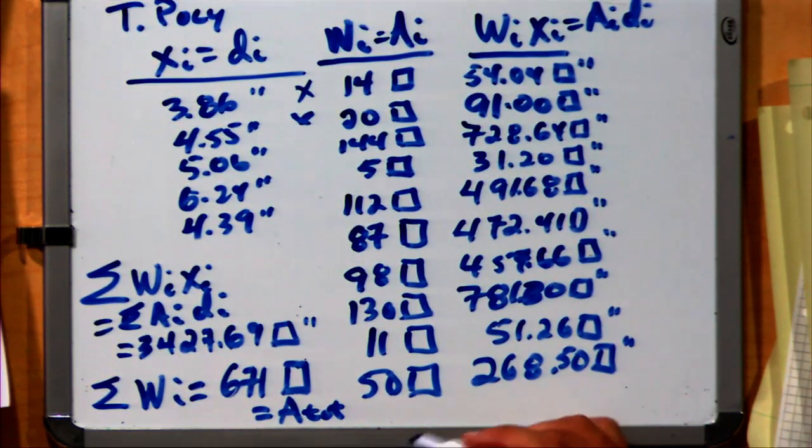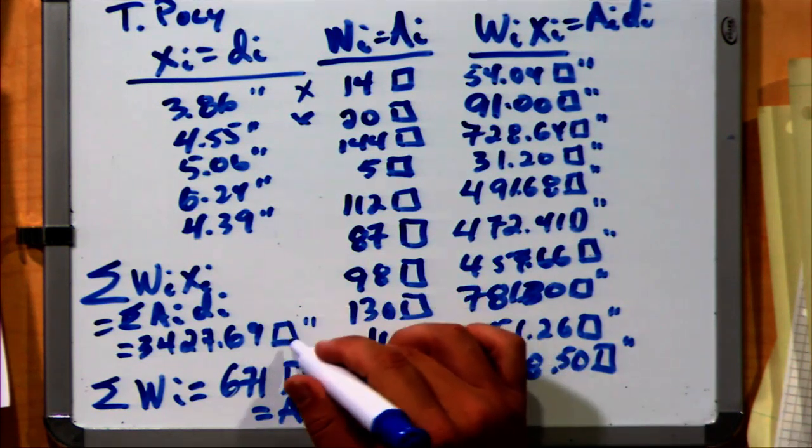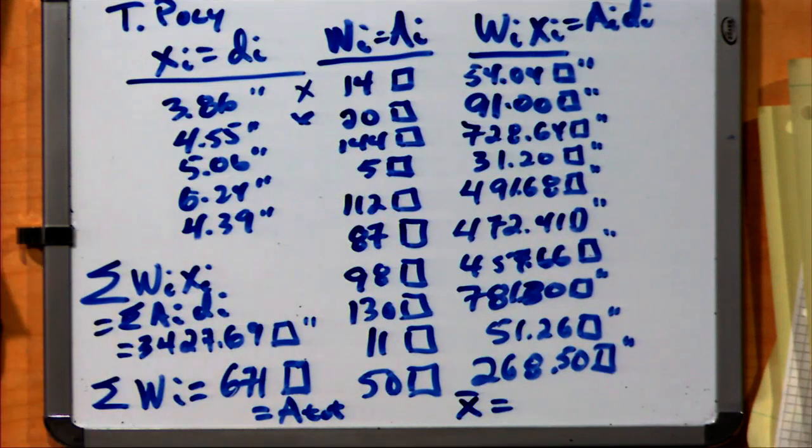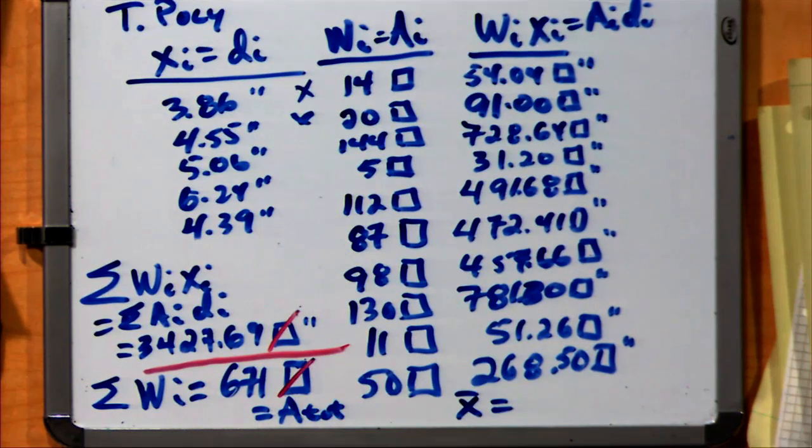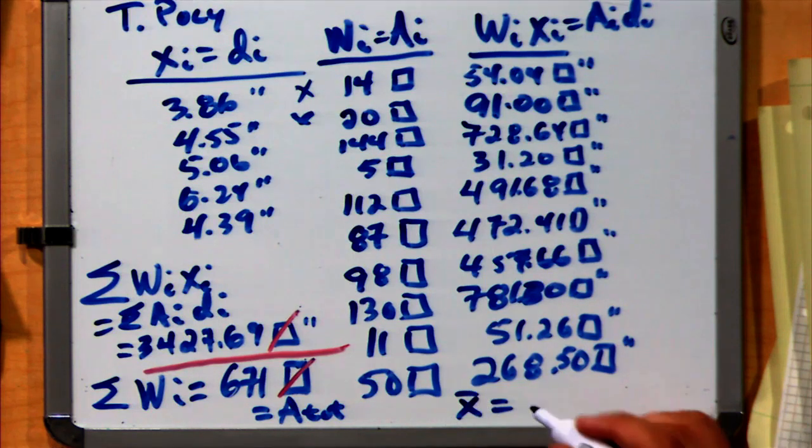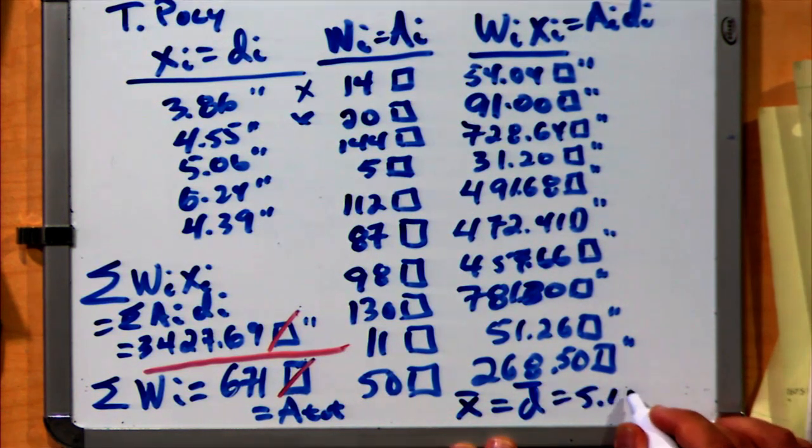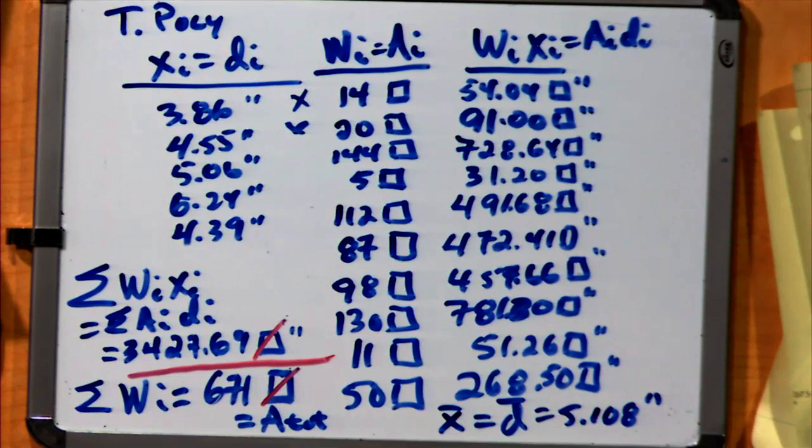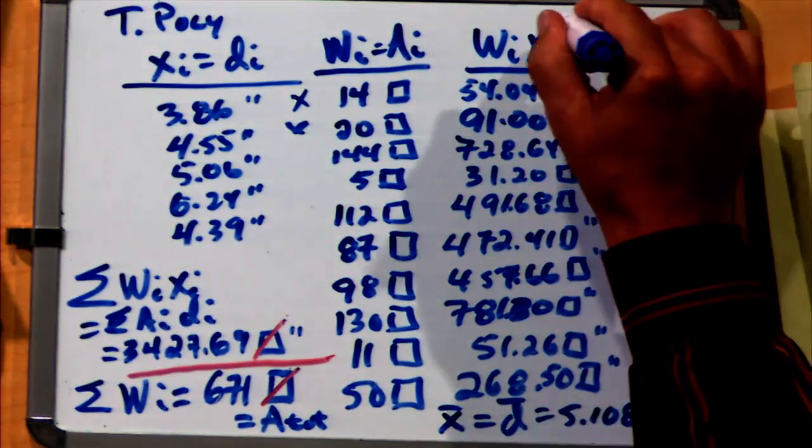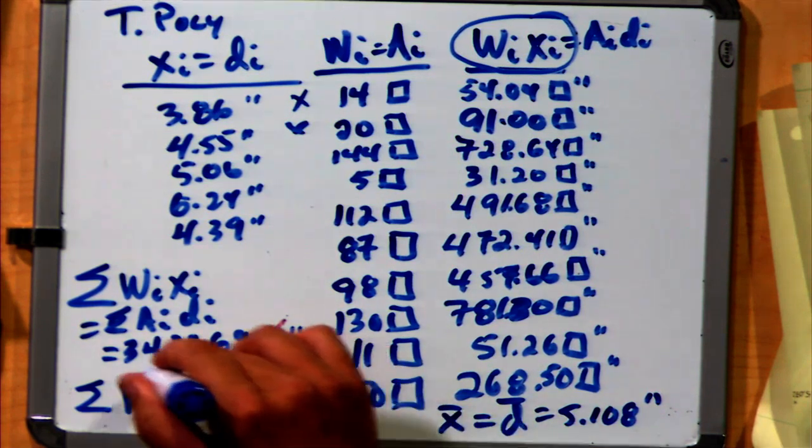Now I take those two values and divide them, and I get a mean depth. If I divide these two values, the units of box will cancel out, leaving me with an answer in inches. So my average depth is 5.108 inches. A little bit larger than the 5.024 inches we calculated using the arithmetic mean. But again, the same sum of weighted values divided by the sum of the weights.